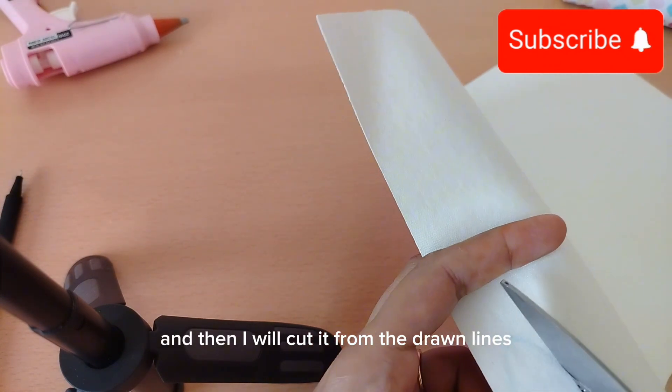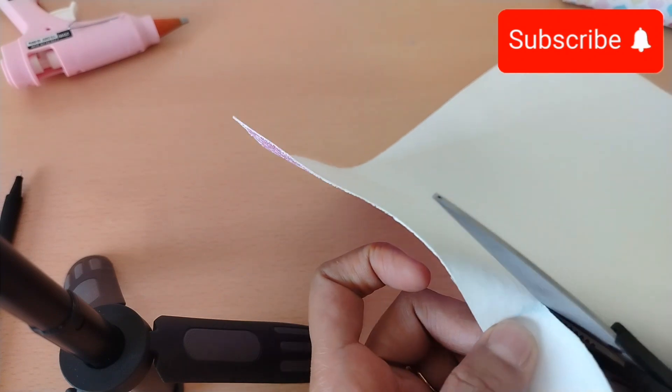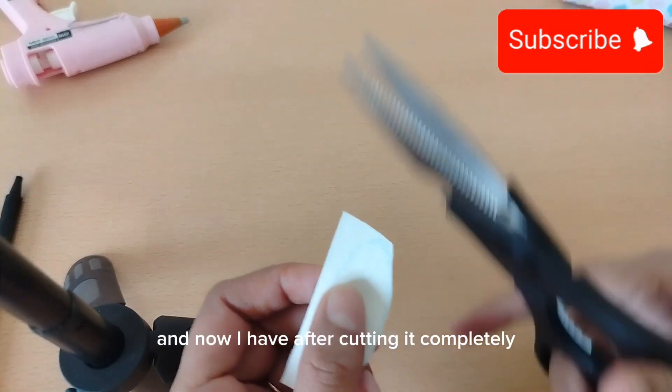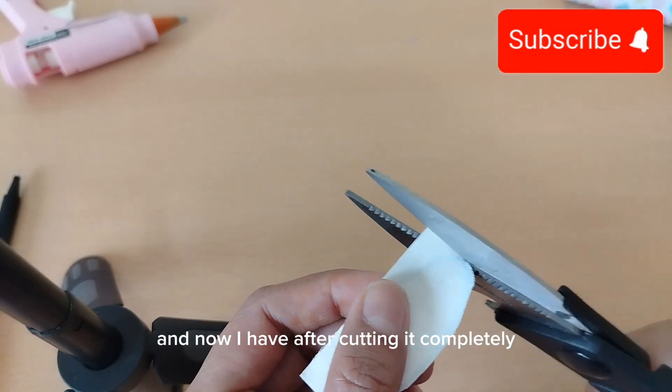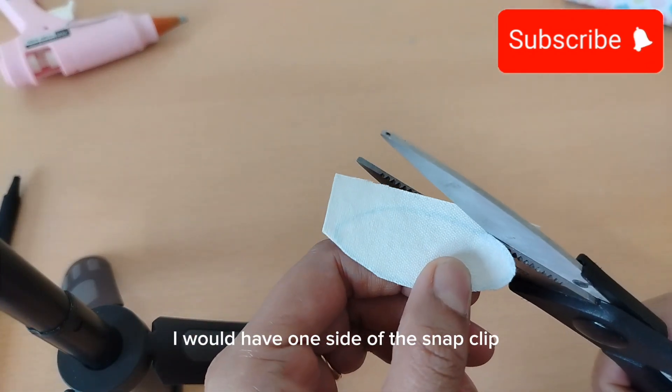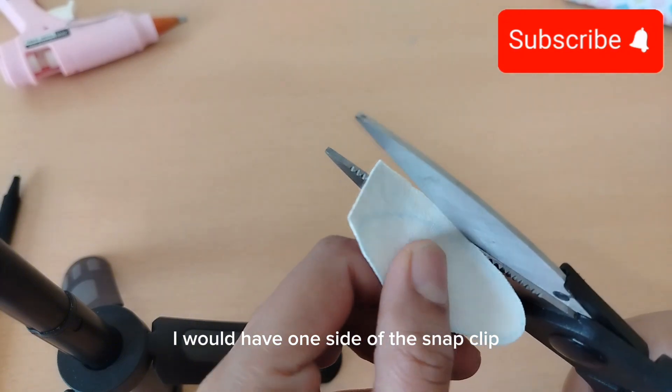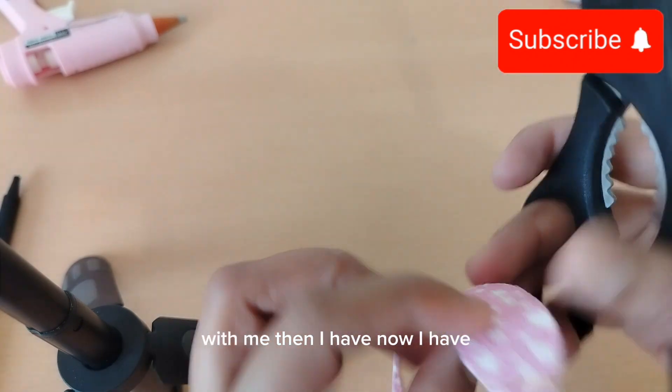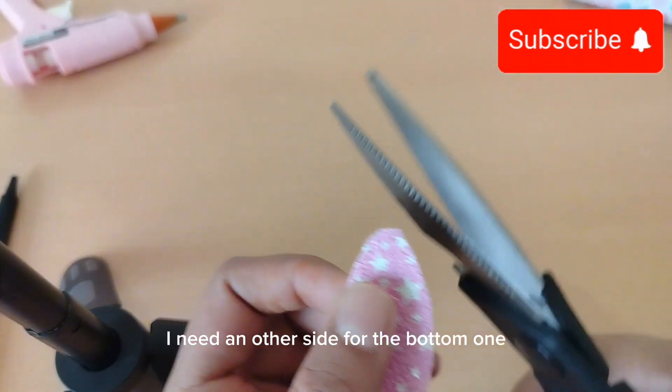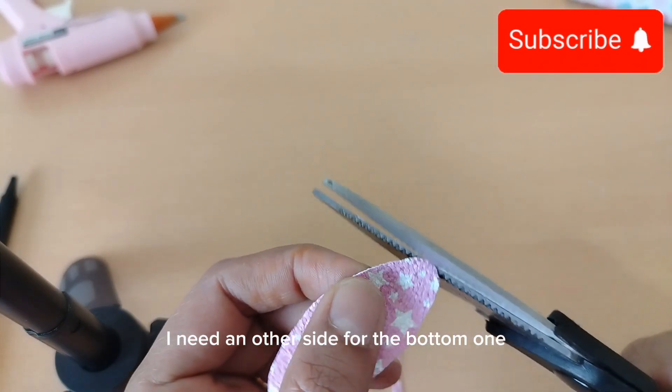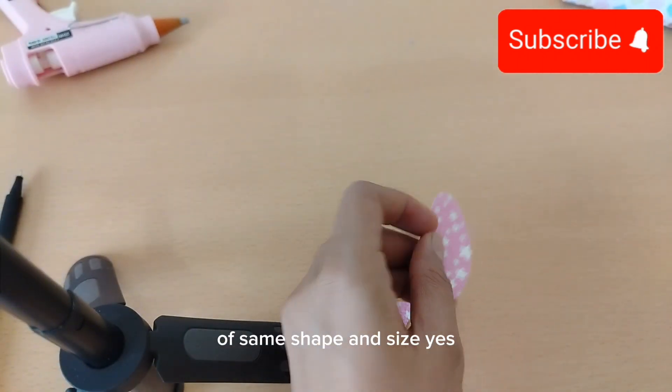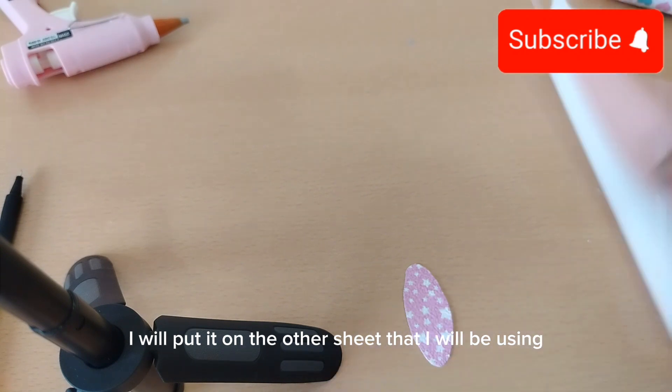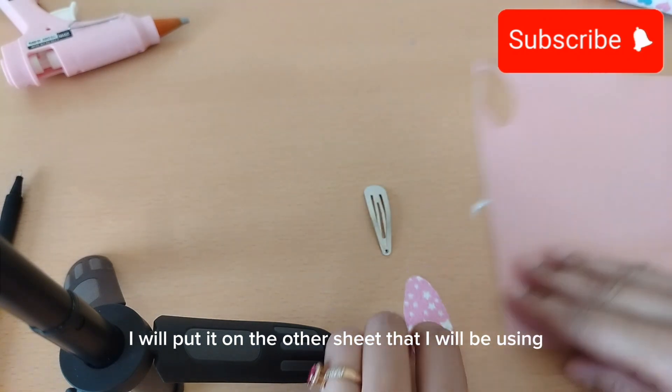After cutting it completely, I have one side of the snap clip. Now I need another side for the bottom with the same shape and size. I will put it on the other sheet that I'll be using for the bottom.